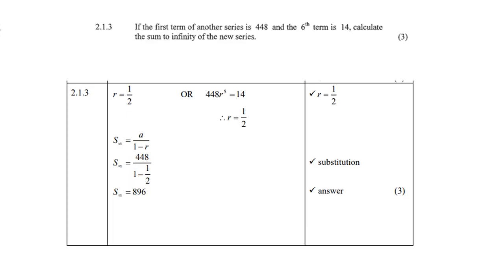Question 2.1.3: if the first term of another series is 448 and the sixth term is 14, calculate the sum to infinity. So r is a half — you can calculate this by 448 times r to the power of 5 equals 14, then find the fifth root of (14 divided by 448), giving r equals one half. Using the sum to infinity formula: a divided by (1 minus r), that is 448 divided by (1 minus one half), gives a sum to infinity of 896.